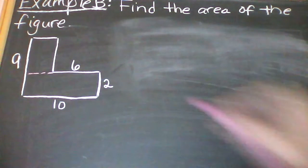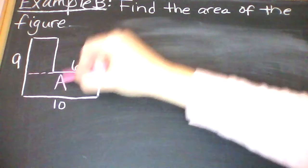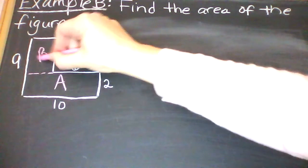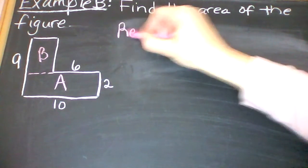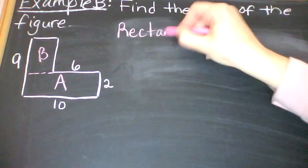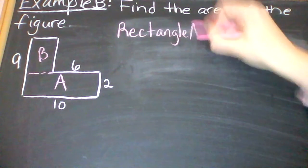So I have two rectangles, rectangle A and rectangle B. I'm going to make a little note here of rectangle A and rectangle B.